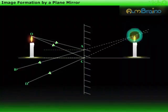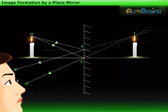Extend them backwards and mark their meeting point as I. For a viewer's eye at E, the reflected rays appear to come from the point I.